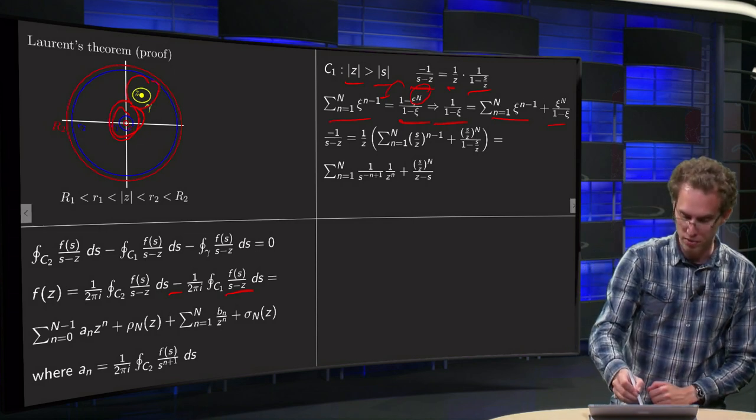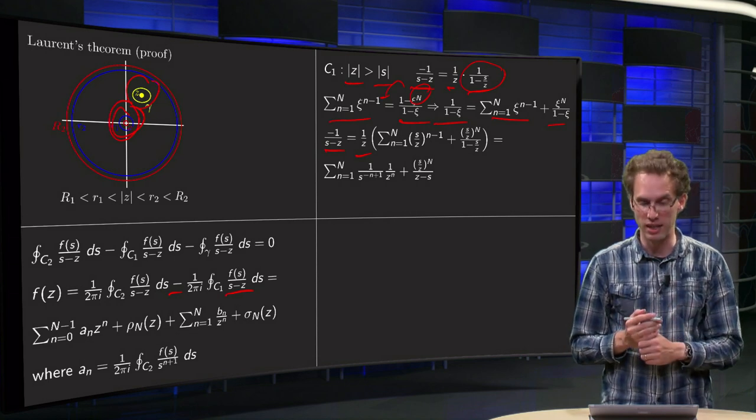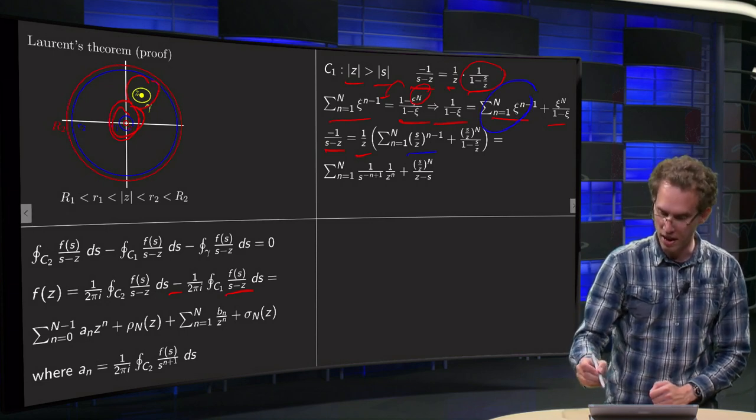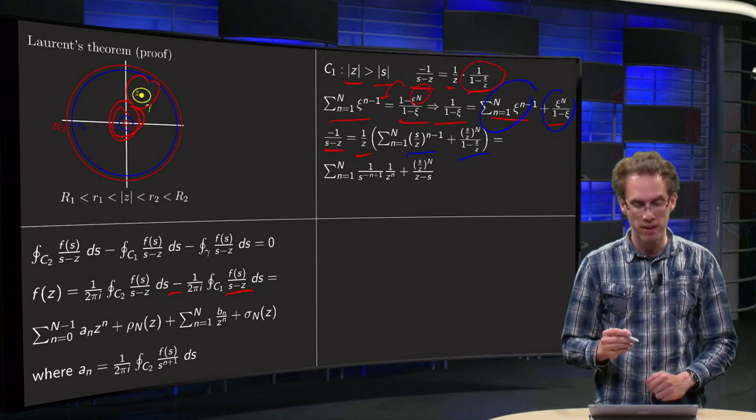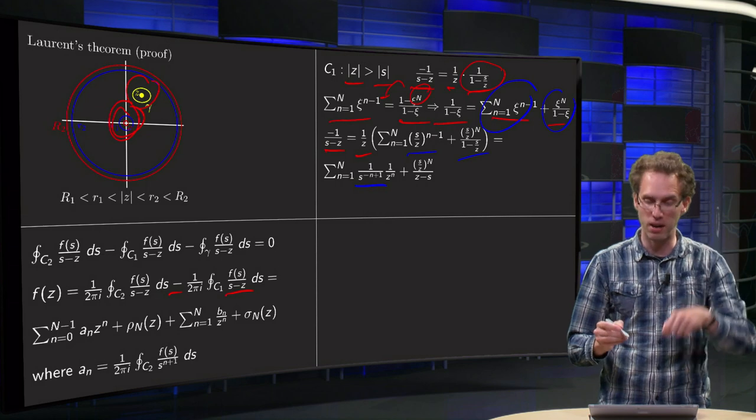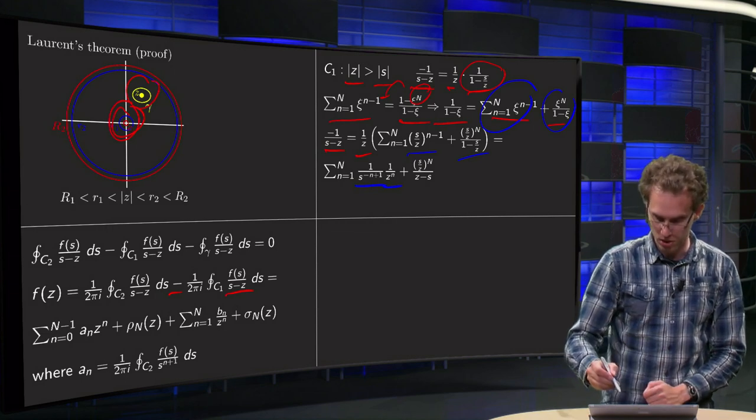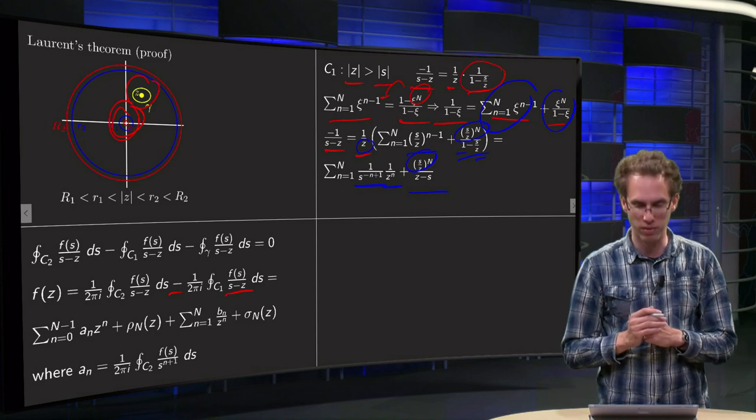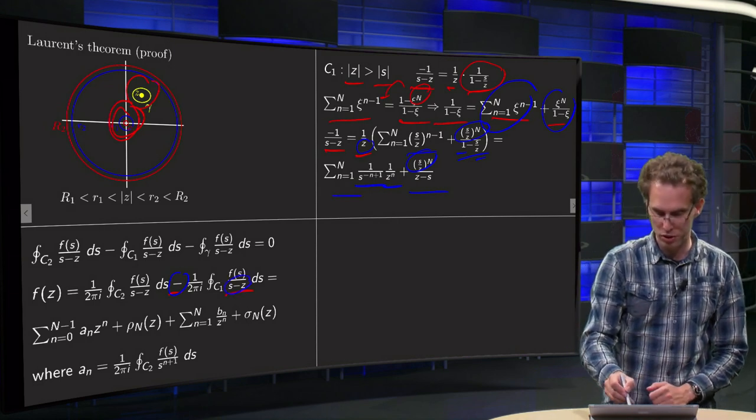So now you can rewrite your -1/(s-z) equals 1/z times 1/(1-s/z), so choose ξ equals s/z, so you get the sum (s/z)^(n-1) and the last term over here, (s/z)^N times 1/(1-s/z). And then finally you bring in the 1/z, so you get s^(n-1)/z^n, if you bring it down, and you just leave this part here and multiply the 1/z to get the z-s over here. So there we are. Now we have rewritten the -1/(s-z) into some sum and some remainder.